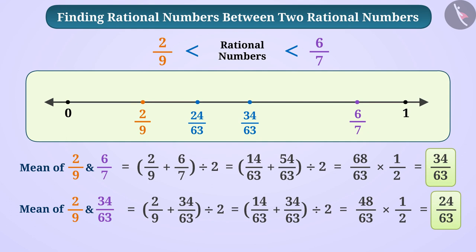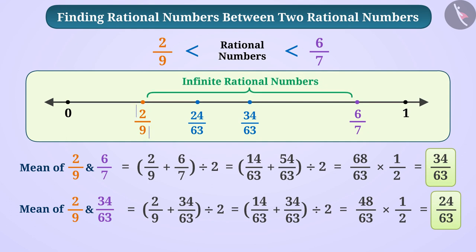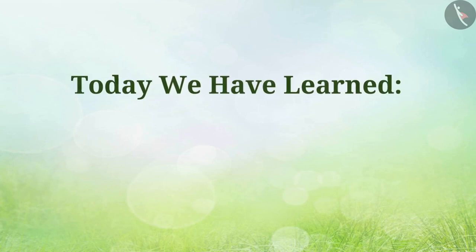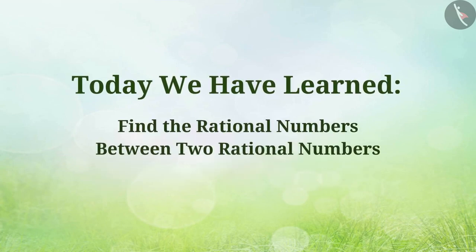In this way we can find infinite rational numbers between 2 by 9 and 6 by 7. So today we have learned how to find the rational numbers between two rational numbers. In the next video we will see some examples of these.